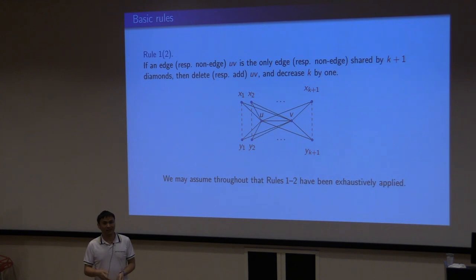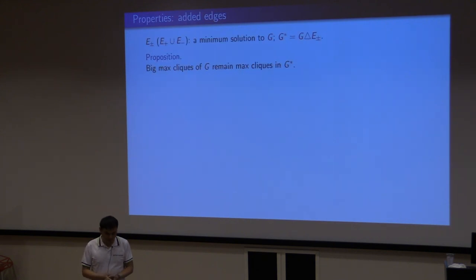The first rule is, we have seen a lot of this. If some edge is shared by too many diamonds, you have to delete it. If a non-edge is shared by too many diamonds, you have to add it. You have to do that and decrease the budget accordingly. Because this is quite naive, we assume throughout the talk that this rule has been applied. We don't worry about this.